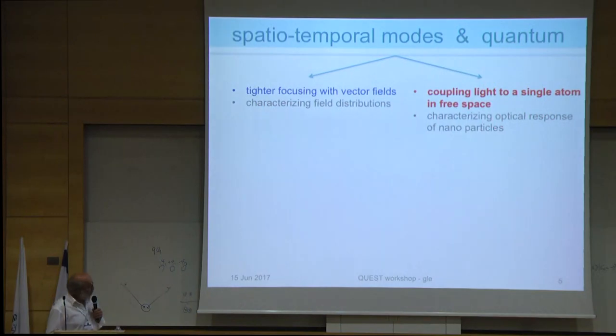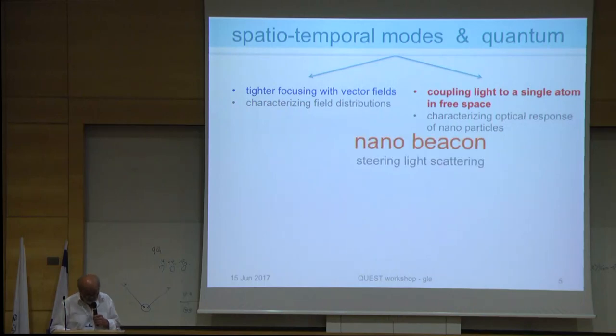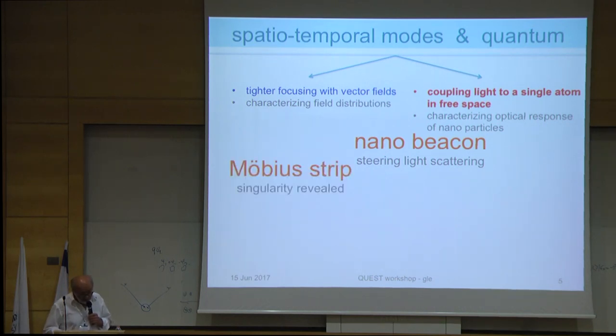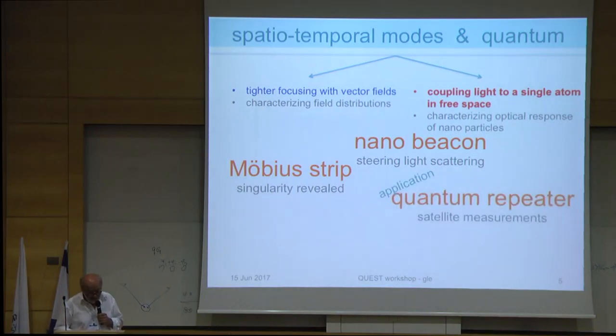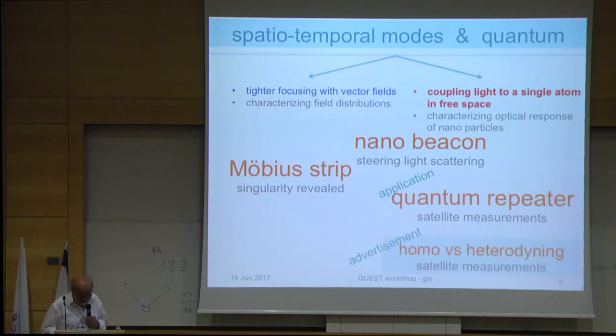I will start with single atom interacting with weak light in free space. Then I'll tell you about a nano beacon, which is more towards the classical part. Then I'll tell you about the Möbius strip in optics. Then I'll briefly tell you about our plans to go to quantum repeater. And at the end, I'll give you an advertisement.